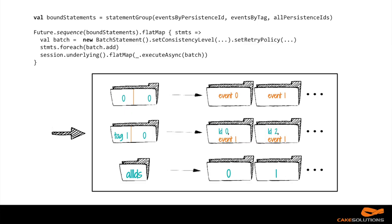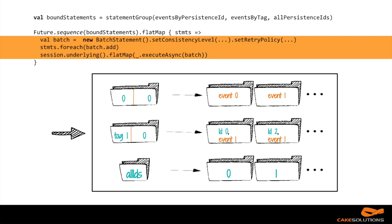At this point, you might wonder: why go through this whole pipeline? Why wouldn't we simply, when an actor writes an event, write in a transaction into all these materialized views that we can then efficiently query? That would work very well in a relational database because you have strong consistency guarantees. But in Cassandra and other distributed databases, you don't have those guarantees. If we wrote in a batch into all three views — Cassandra batches provide atomicity but not isolation.